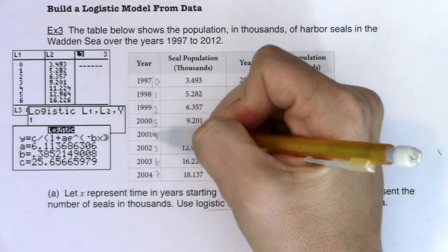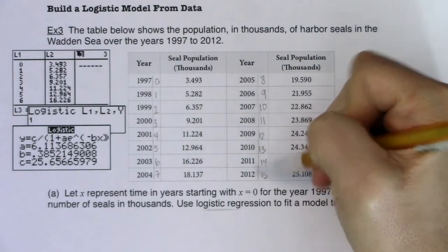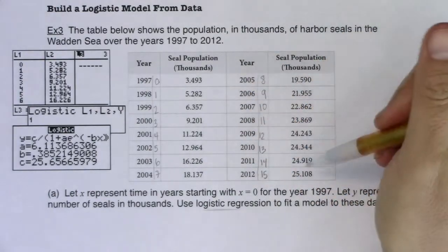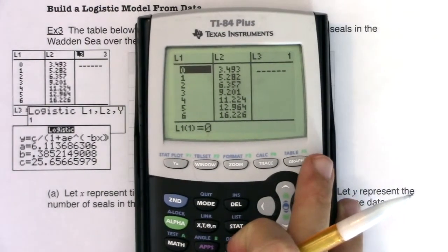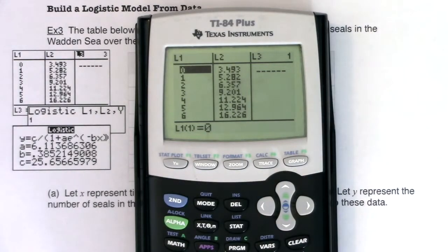In L1 I need to put the number 0 to 15. That actually represents 16 years. And in L2 I'm going to put all of my seal populations. So pause the tape for a moment and put that data in. I already did. So I put my data into L1 and L2. I'm not doing L1, L2 and then L3, L4. You only have two variables: time and the seal population.